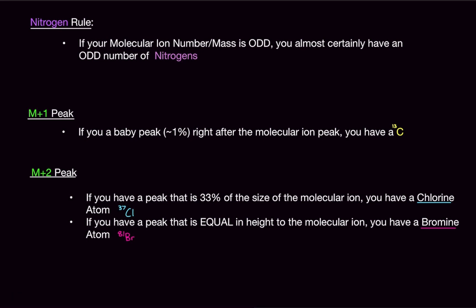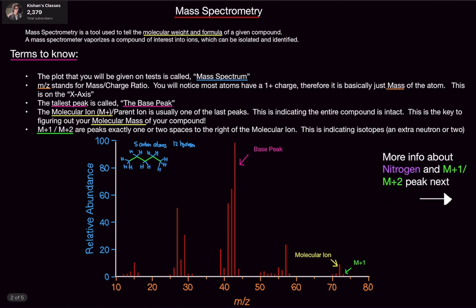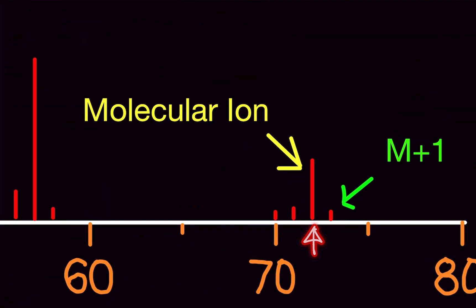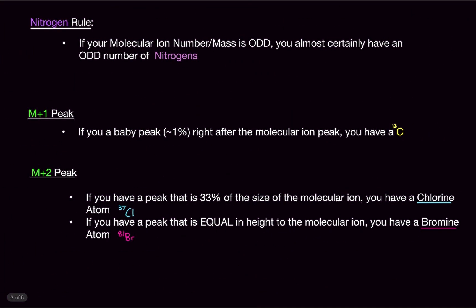Now let's go over the nitrogen rule. It's very simple: if your molecular ion number is odd, you almost certainly have a nitrogen — that's just how it works. If you have an even number of nitrogens (two, four, etc.) then the molecular ion will be even. But if you have an odd number of nitrogens, the molecular ion number will be odd.